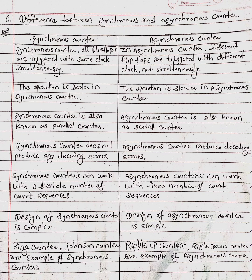Ring counter and Johnson counter are examples of synchronous counters. Ripple up counter and ripple down counter are examples of asynchronous counters.